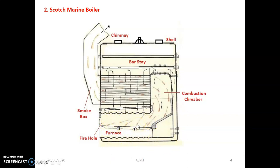After combustion, whatever burnt gases are produced travel through the tubes and are collected in the smoke box, from which the smoke finally exits through the chimney. This is a cylindrical type boiler mostly used for medium capacity applications where the pressure requirement is approximately 17 to 20 bar. In the fire tube boiler, fire continuously passes through the tubes and the remaining portion is surrounded by water.